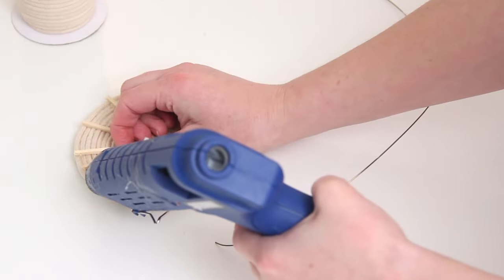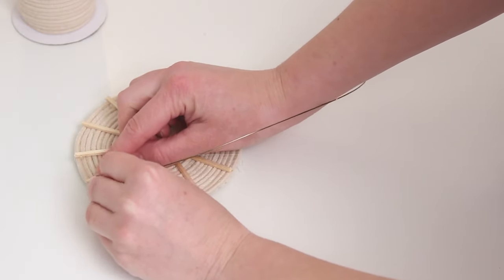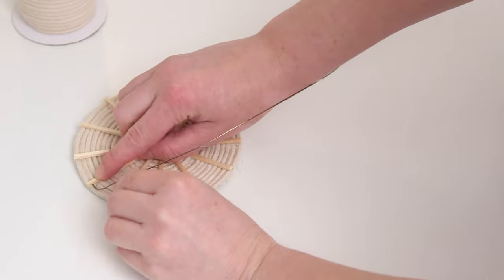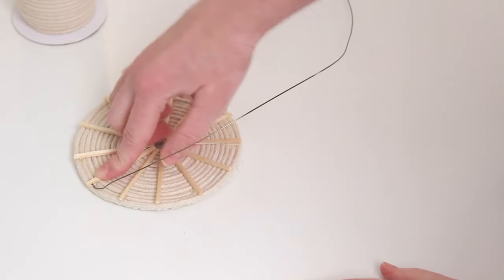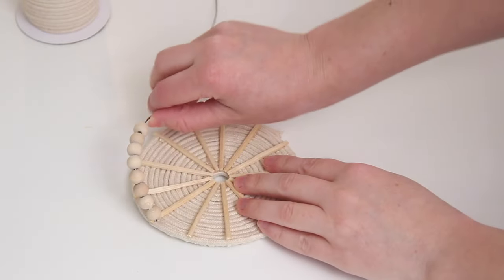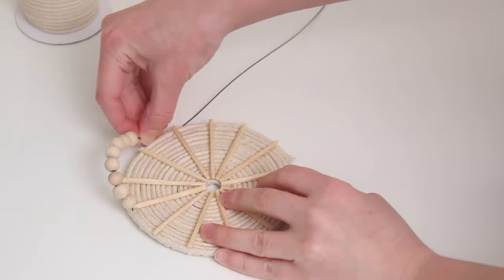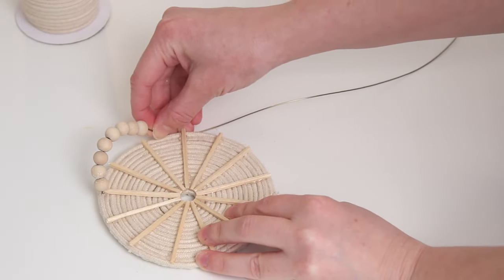Now what I did was take some wire and I lifted up one of the little matchsticks, put some glue underneath, and then I glued the end of the wire right underneath it. And I kind of created like a little L shape with the wire so that it would stay in place once it was totally dry. I started to string on a few beads, and I believe I used eight beads.